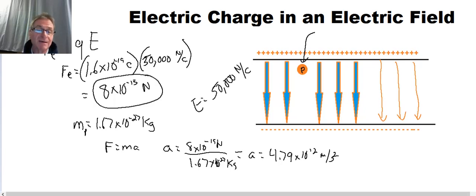So this is a very large acceleration. Obviously, this proton cannot accelerate with that acceleration very long because it's going to be going faster than the speed of light.